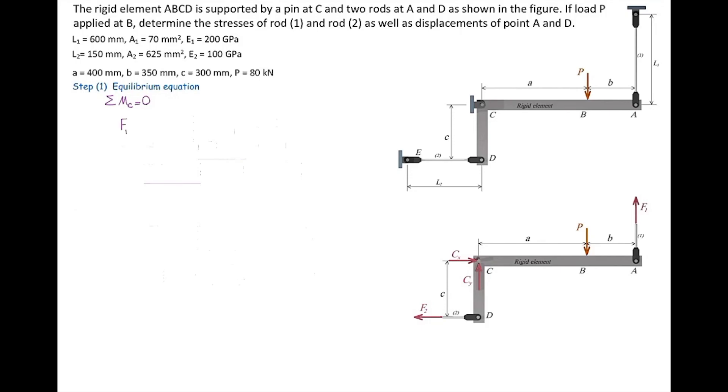Let's write down sum of moments about C. Force F1 multiplied by its distance is F1 multiplied by A plus B. I'm assuming counterclockwise is positive, so F1(A+B) gets a positive sign. Next is the force from F2. This is negative because it's clockwise, opposite to the previous moment. The moment from that is F2 multiplied by its distance to point C, which is C or 300 millimeters. The third term is the moment from external force P. That's again clockwise, so it gets a negative sign. Its distance to support C is A, which is 400 millimeters. Sum of the moments equals zero.